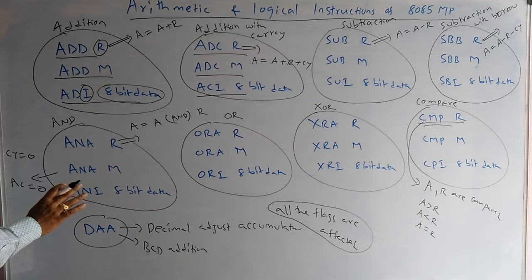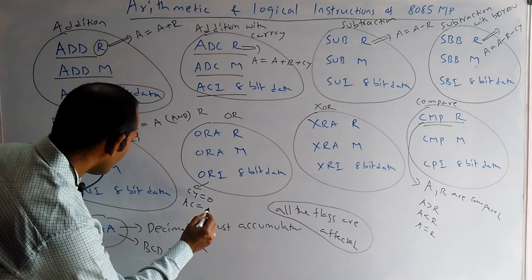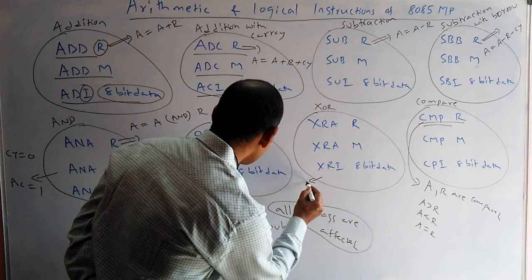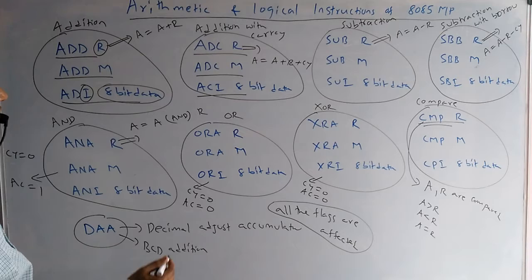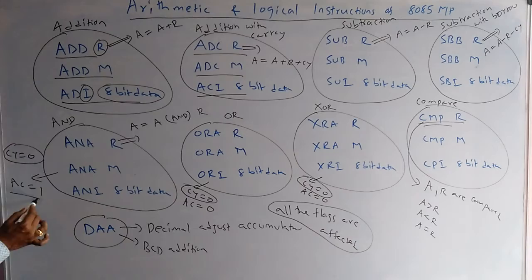The remaining three flags will change according to the result. In AND, carry is zero and AC is one. In OR, carry is zero and AC is zero. In XOR, carry is zero and AC is zero. So always carry is zero in all three — AND, OR, XOR — but AC differs: in AND it is one, in OR and XOR it is zero.